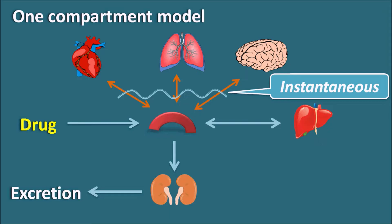That means the drug distribution into the various organs is very rapid and all the organs represent a single compartment, then we can consider the kinetics as one compartment model. In this video we will see what kinetics are involved with the one compartment model and how we can solve problems in the one compartment model.